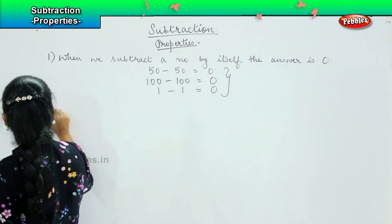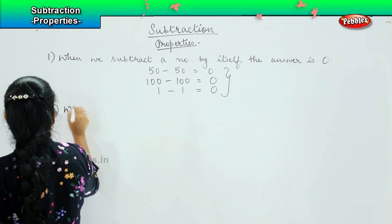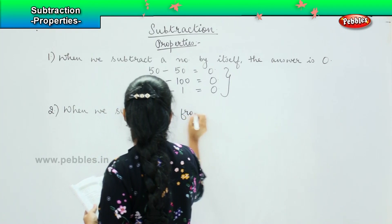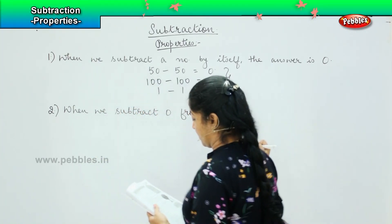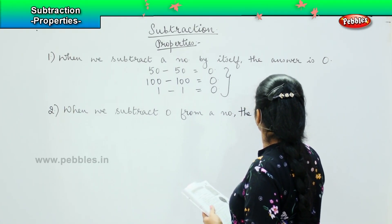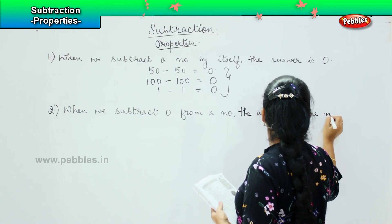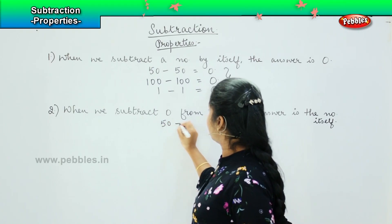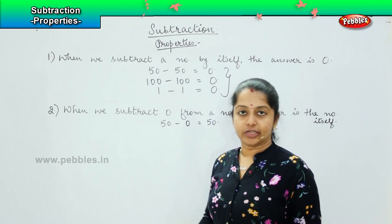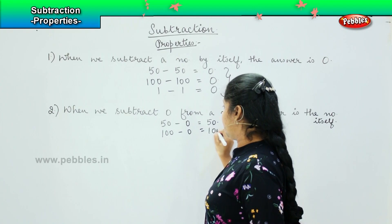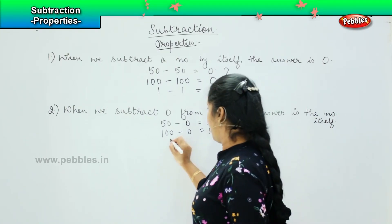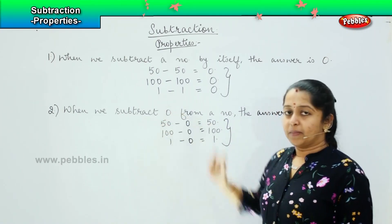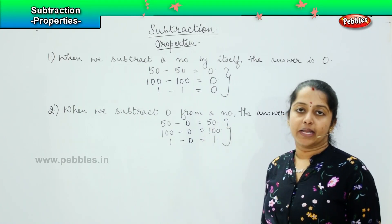Coming to the next property, the second property says that when we subtract zero from a number, the answer is the number itself. For example, if I write fifty minus zero, I get the answer fifty. I write hundred minus zero — the answer is same as the question, which is hundred. One minus zero, I get the answer one. So any number which we subtract by zero, it gives me the difference value as the number itself.